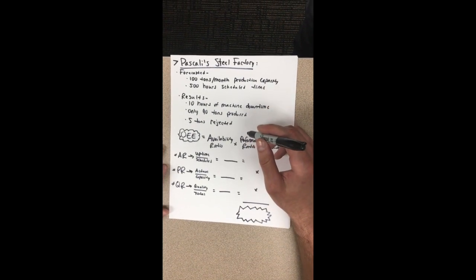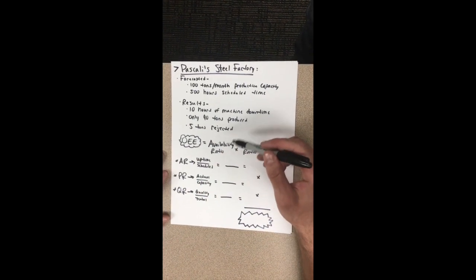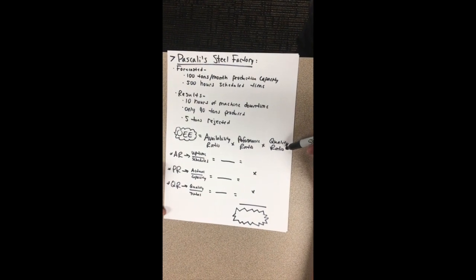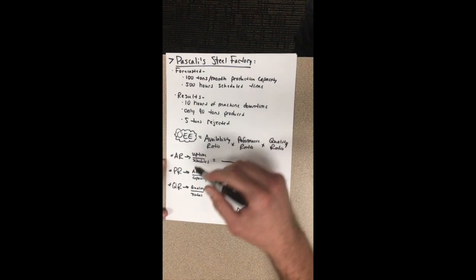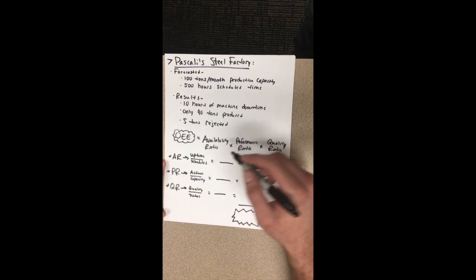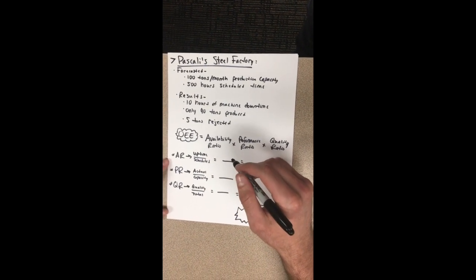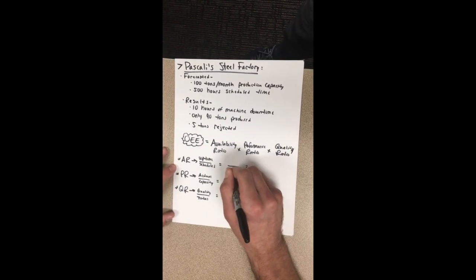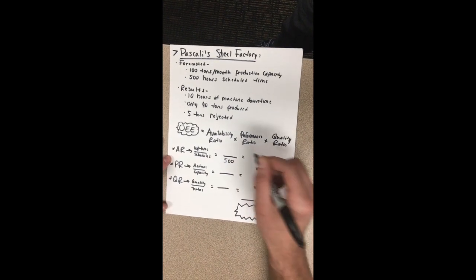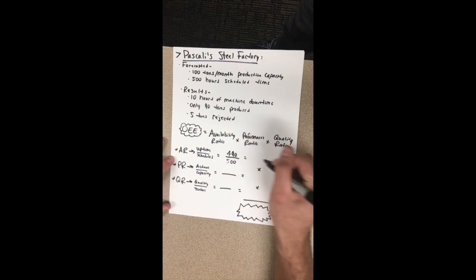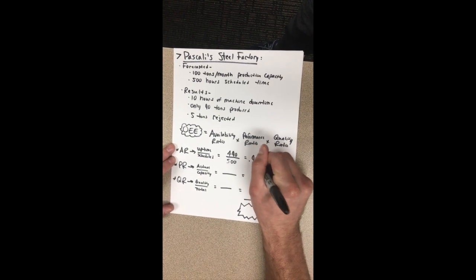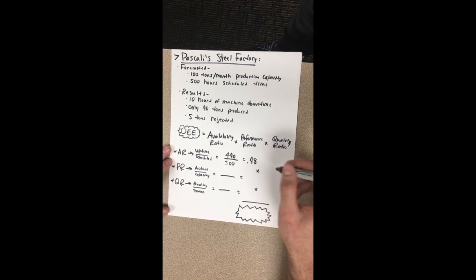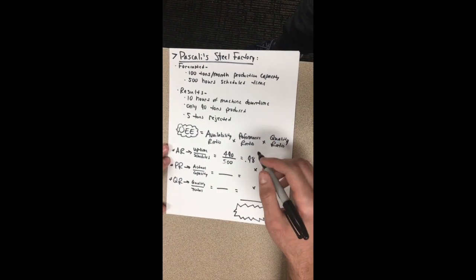As we noted on the board, our overall equipment effectiveness ratio is going to calculate the availability ratio multiplied by the performance ratio multiplied by the quality ratio. So first, the availability ratio is our uptime, which is the actual time that our machines ran for during the month, divided by our schedule time. As we know, we were scheduled for 500 hours, but our machines only ran for 490. This equates to a 98% availability ratio. As we showed on the board, that plant manager couldn't be happier with those results.